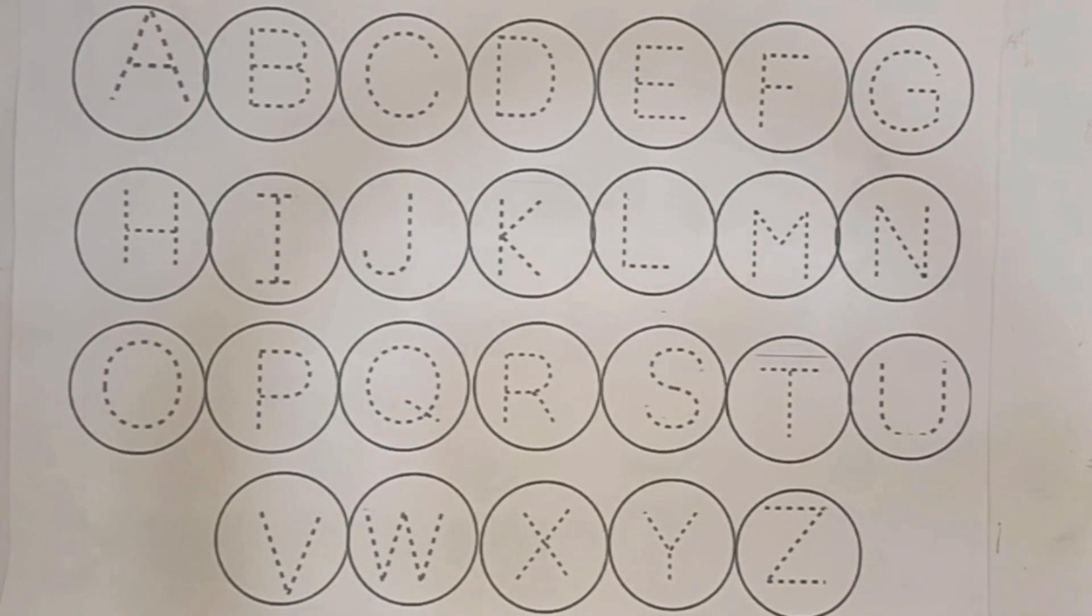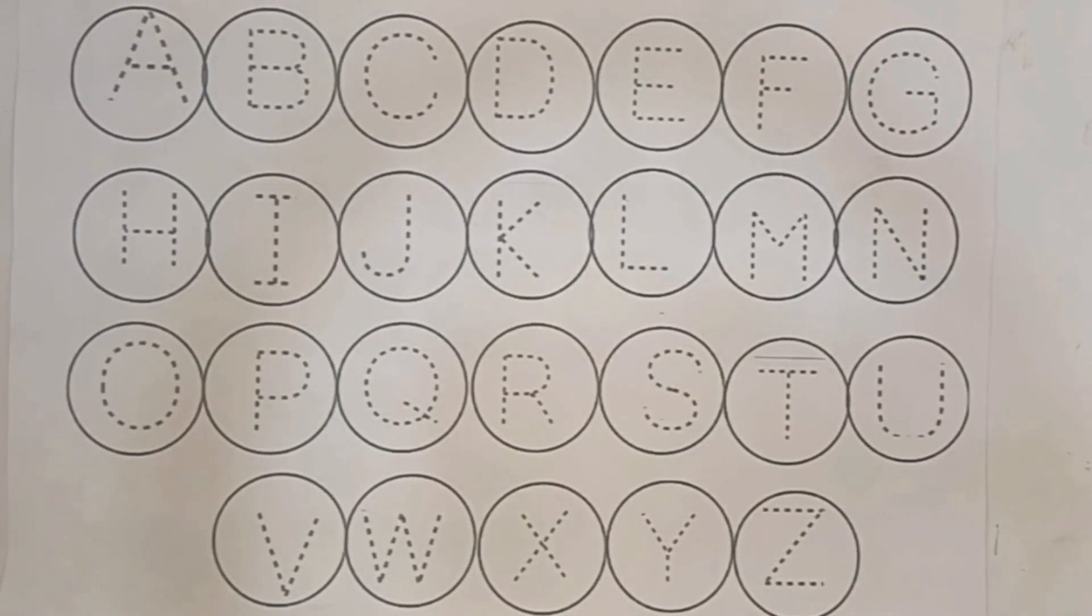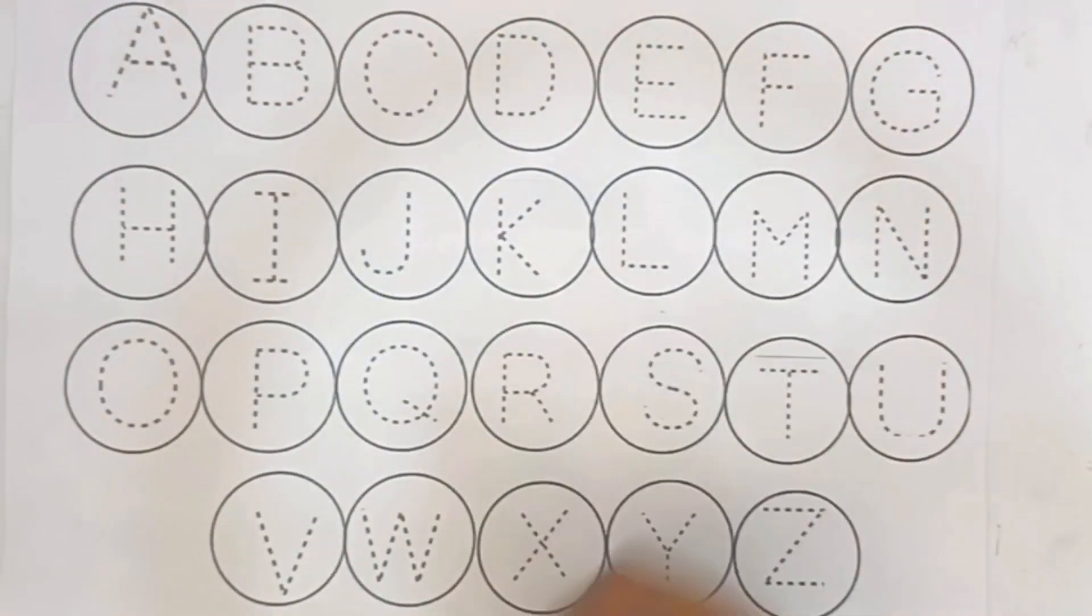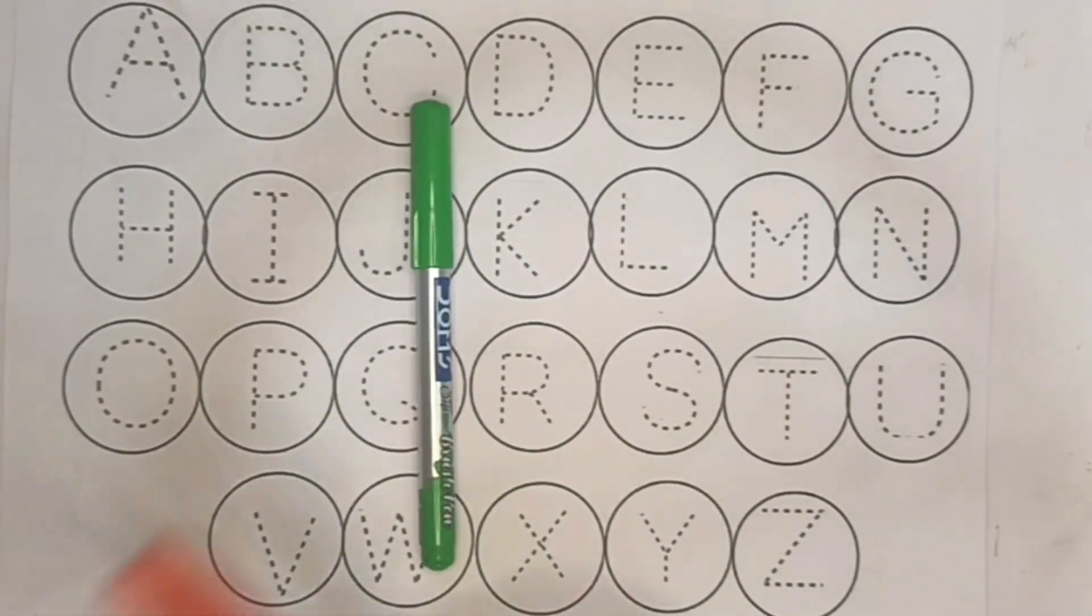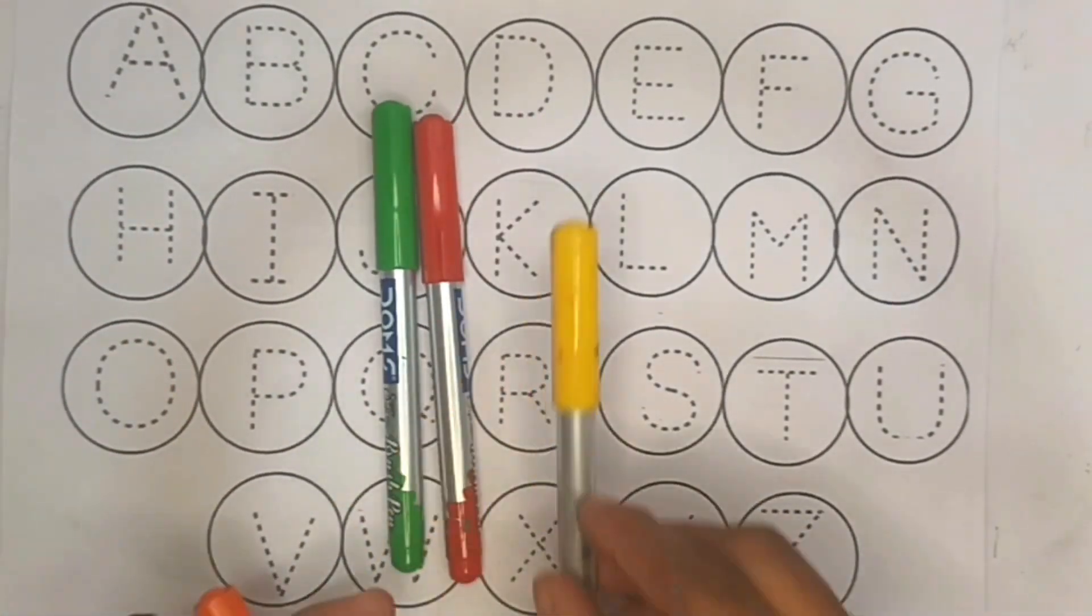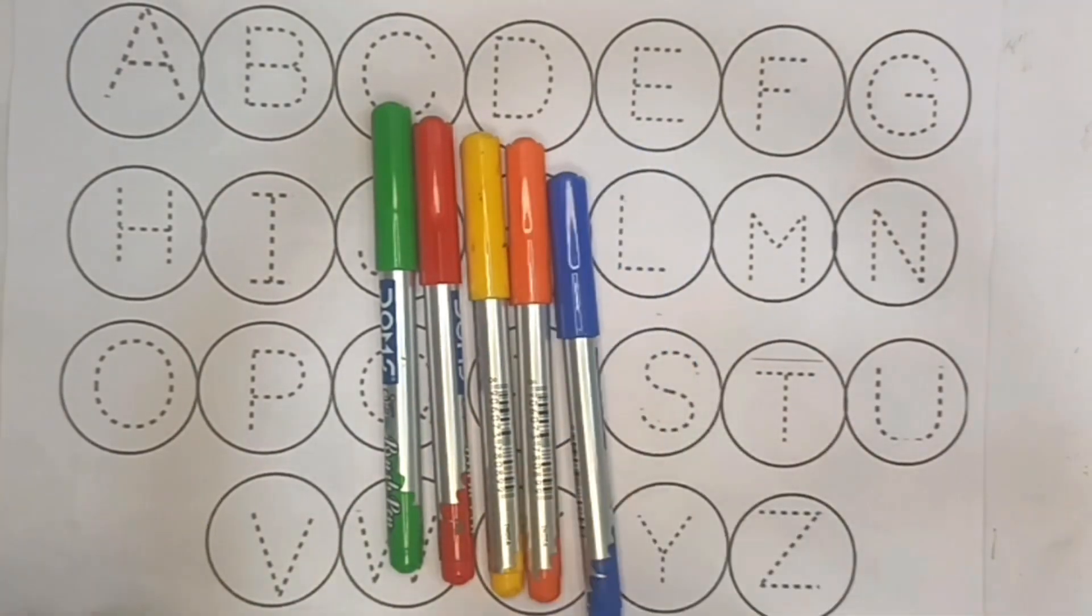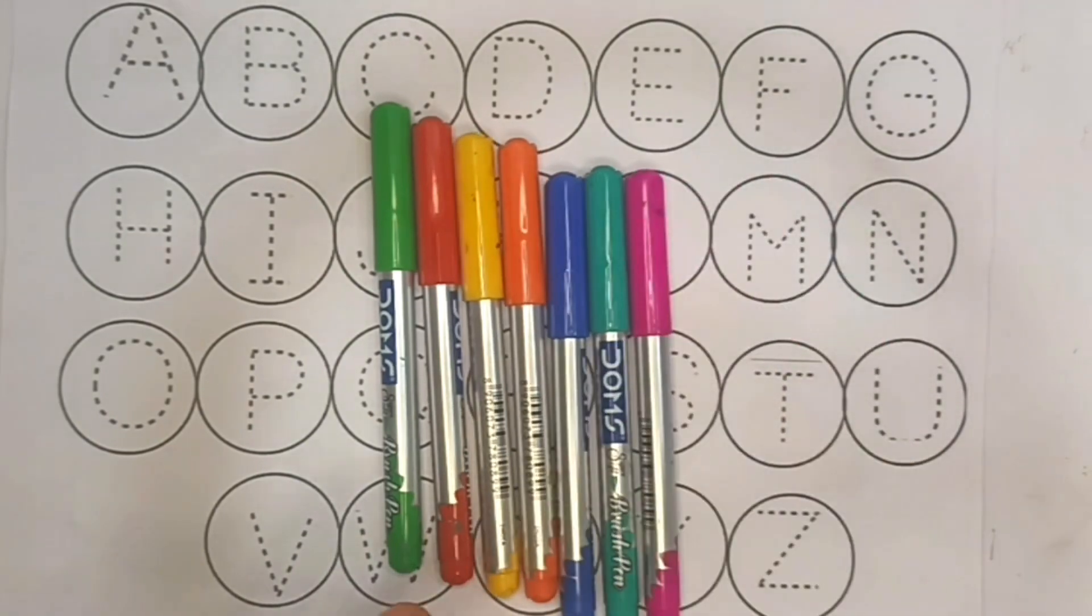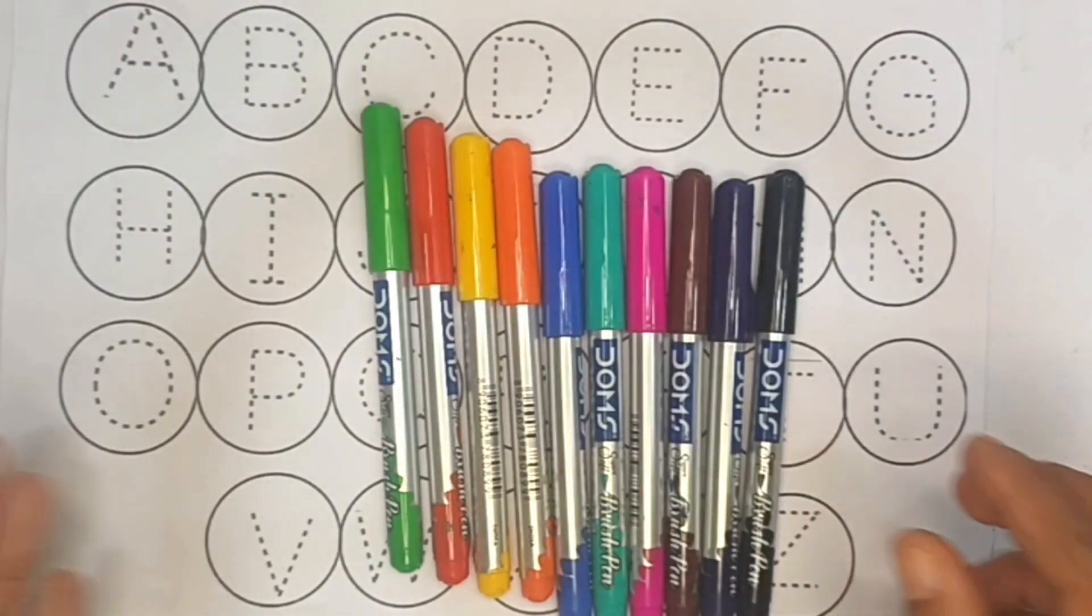Hello guys, let's learn some colors with alphabets. Colors: green color, red color, yellow color, orange color, blue color, shine color, pink color, brown color, purple color, black color.